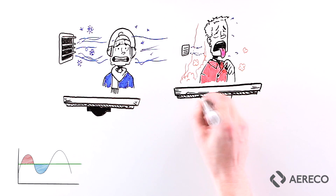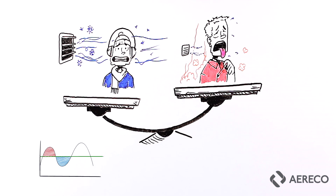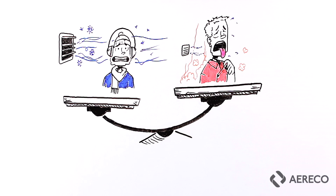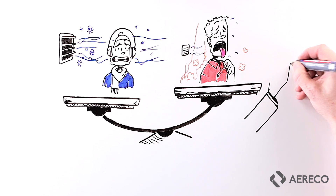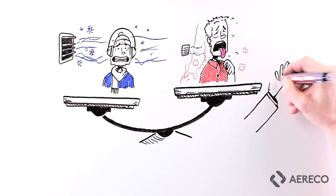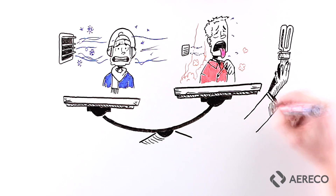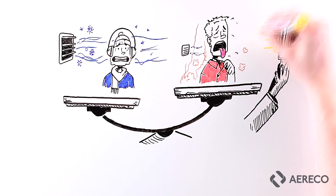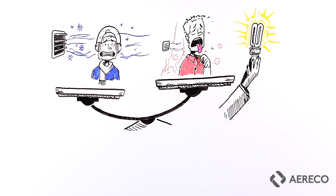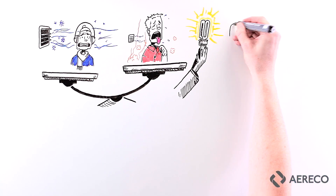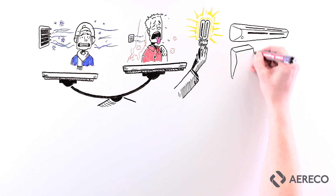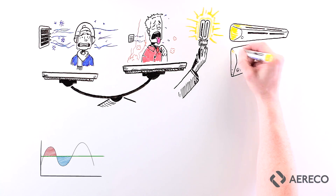As we pointed out in the first video, leaving the occupant to control ventilation is not without its risks. This balancing act was one of the reasons MVHR has become popular as a way of ventilating enough but doing so efficiently. But if you think about it, even MVHR without smart control is a bit like inventing an energy-efficient light bulb and insisting all the lights are left on.